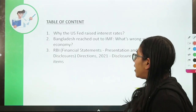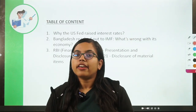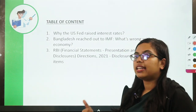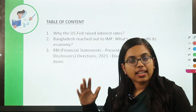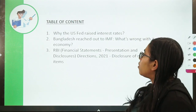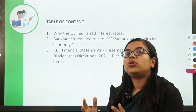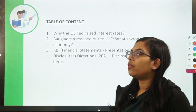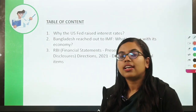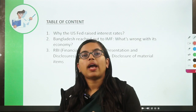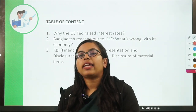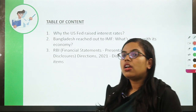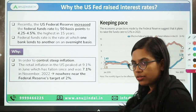For today we have three news articles to discuss. First, why has the US Federal Reserve increased the interest rate in its economy? Second, we will talk about why Bangladesh has gone to the IMF for economic assistance. And thirdly, we will talk about certain instructions issued by RBI to be followed by commercial banks while preparing the annual financial statement.